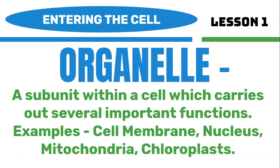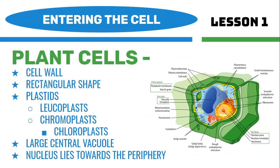The proper definition of an organelle is a subunit within a cell which carries out several important functions. Some examples are the plasma membrane or cell membrane, the nucleus, the mitochondria, or the chloroplasts. Plant cells have a cell wall, and animal cells do not. They have a cell wall because they need to maintain their strong, straight rectangular shape, whereas an animal cell has an irregular shape.